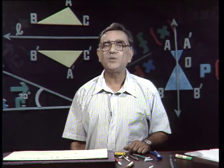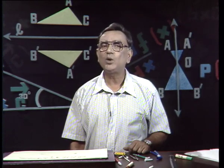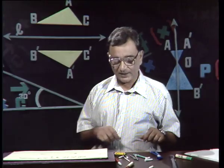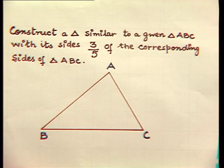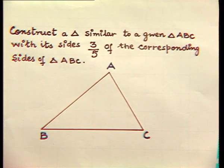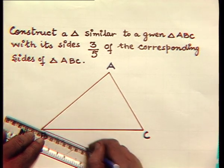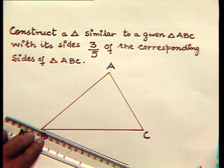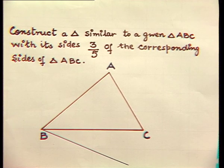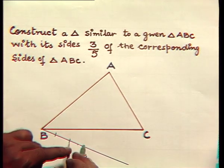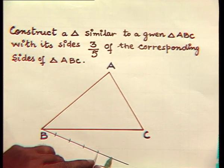But it is not only line segments which are to be divided. At times we have to draw a triangle which is smaller in size to that of a given triangle. Let us say in triangle ABC, I have to draw another triangle which is three-fifths of the corresponding sides of triangle ABC. To do that, once again we will divide the line segment BC into five equal parts. Here is the line segment; we draw it, then we mark five points on this: one, two, three, four and five.